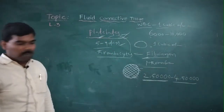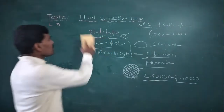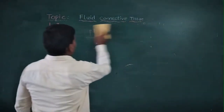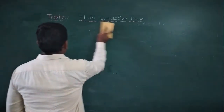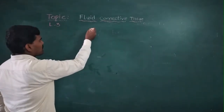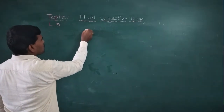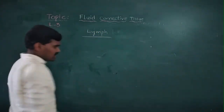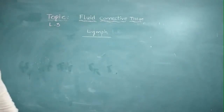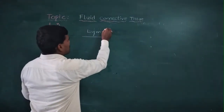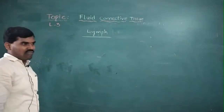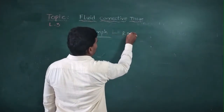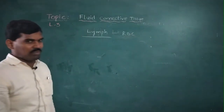This completes the discussion on platelets. Now we are going to discuss Lymph. Lymph is blood minus RBC — that is, blood lacking RBCs.